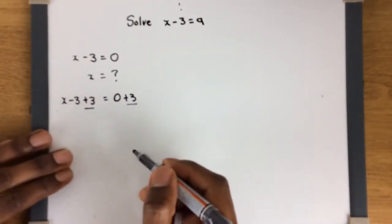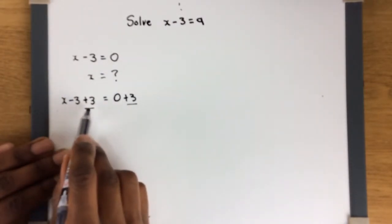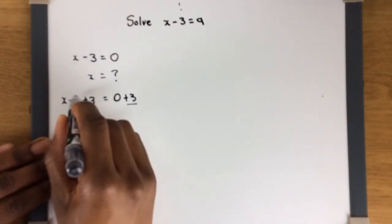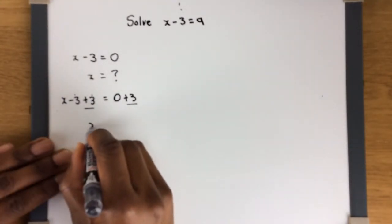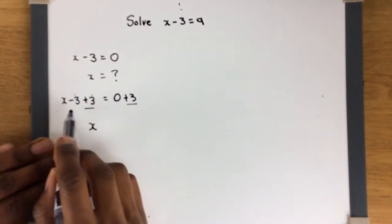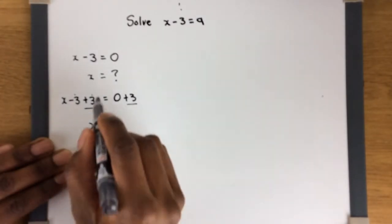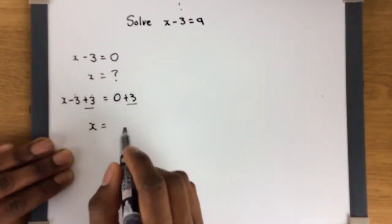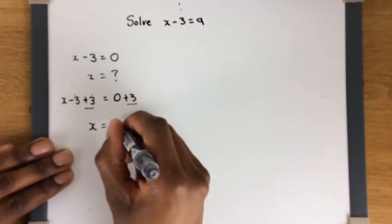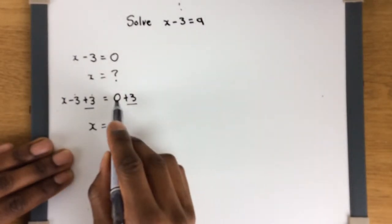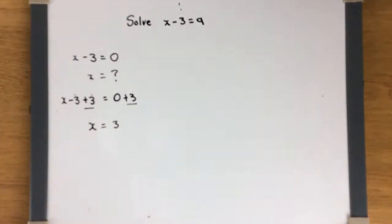The whole point of doing the opposite is that on this side, minus 3 and plus 3 cancel out — because you're taking away 3 and then adding 3 — so you're left with just x. And on the other side, 0 plus 3 is simply 3. So you end up with x equals 3.